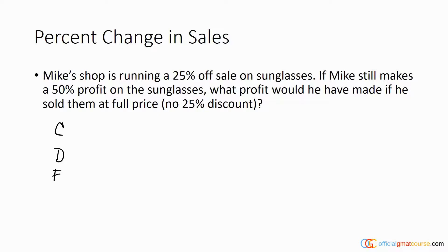I want to conceptualize them together so we know the relationships between certain prices. We have, for example, that we're running a 25% off sale on sunglasses. This means the discount price is worth 75% of the full price, because we've discounted by 25% and are left with three quarters of the original price.